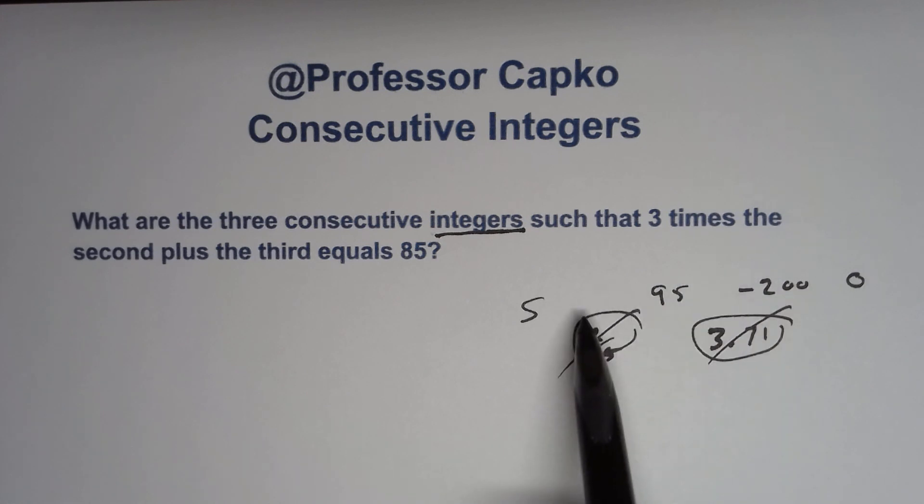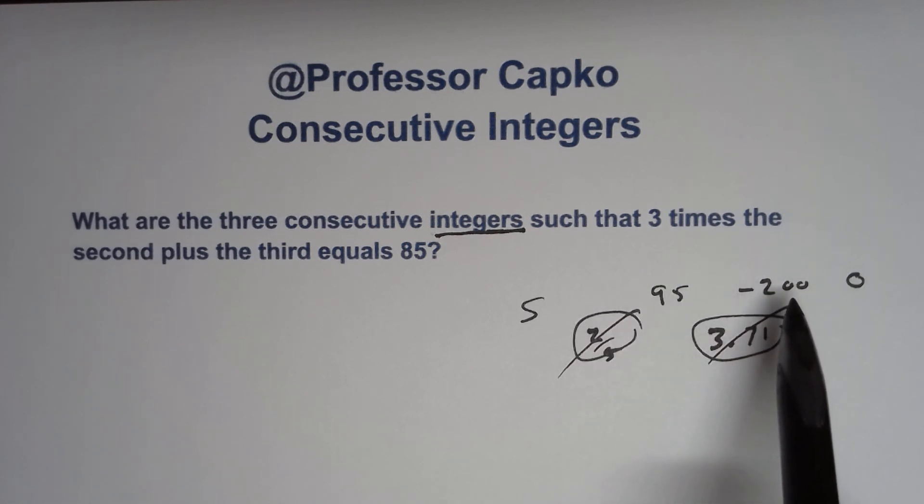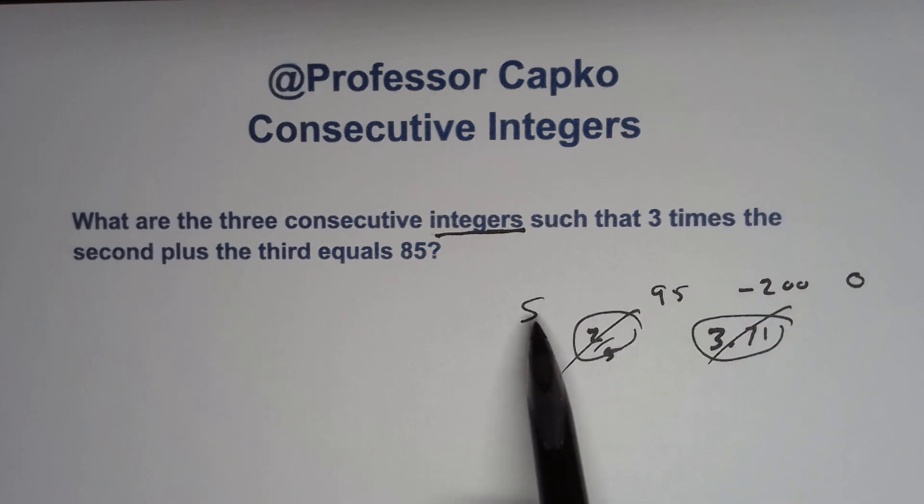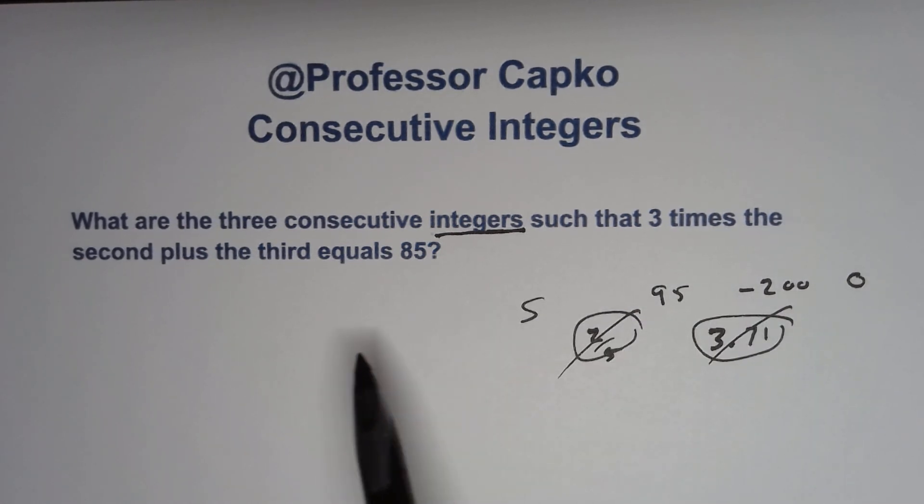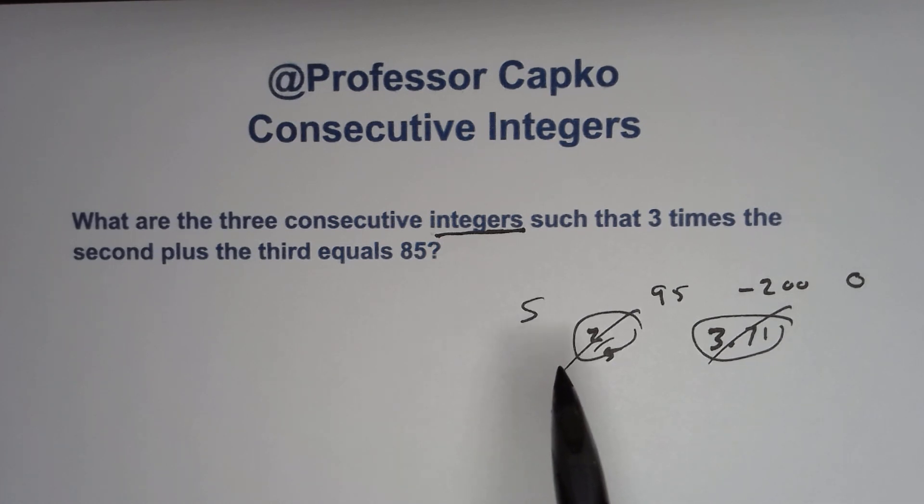They can be positive and they can be negative, whereas whole numbers are very similar but they are not negative. But integers can be negative. So they go from 0 to positive infinity one direction and from 0 to negative infinity the other direction.